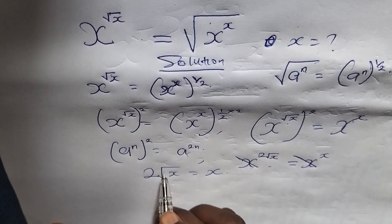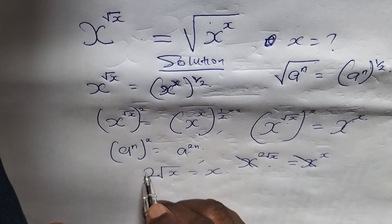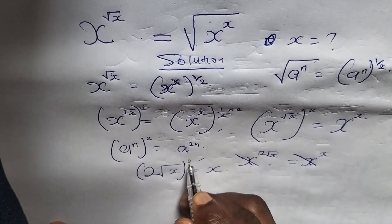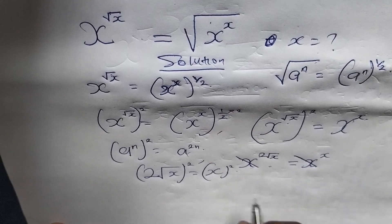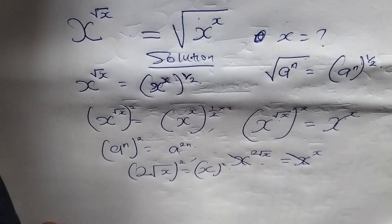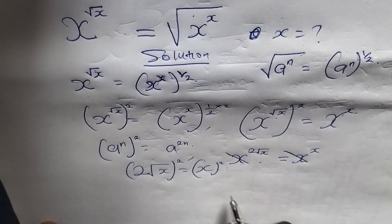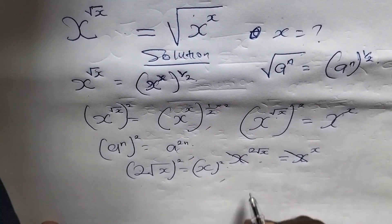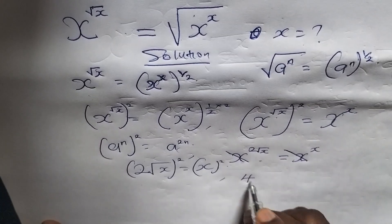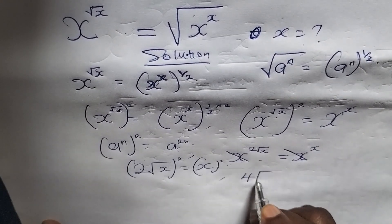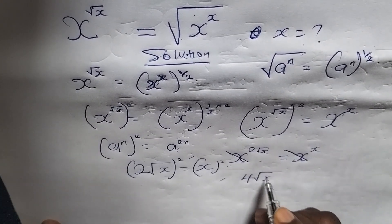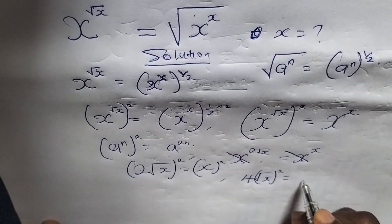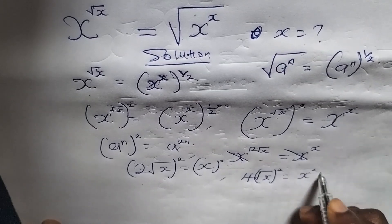So we want to remove this square root. We can square both sides. So squaring both sides, we are now having 4 times root of x, to the power of 2, is equals to x squared.